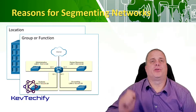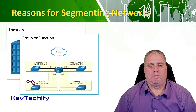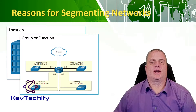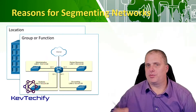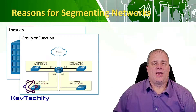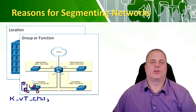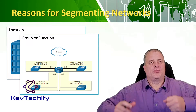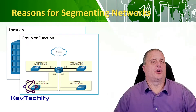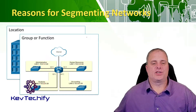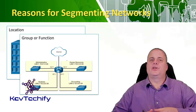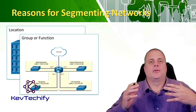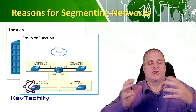You can also segment by group or function. Put all administration into one group to make sure they have good access, quick access, and priority — because they're your boss. Put students into another local area network, since they're inquisitive and will probe your network, so you want additional security to keep them out of other parts. The human resources network gets its own segment too, since you have compliance concerns like HIPAA requiring information to be kept confidential and private, allowing you to set up different security methods there.